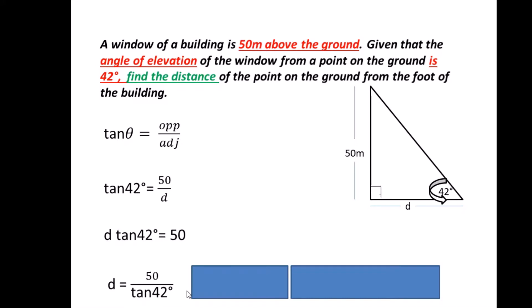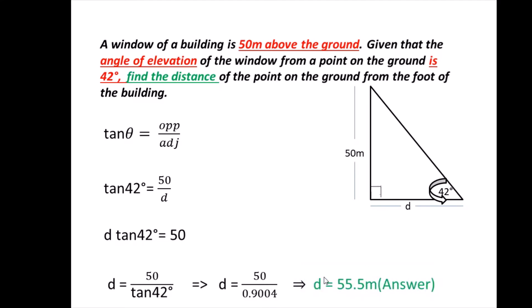With the help of a calculator, we find the value of tan 42, which is 0.9004. Dividing 50 by 0.9004 gives d equals 55.5 metres, which is our required answer.